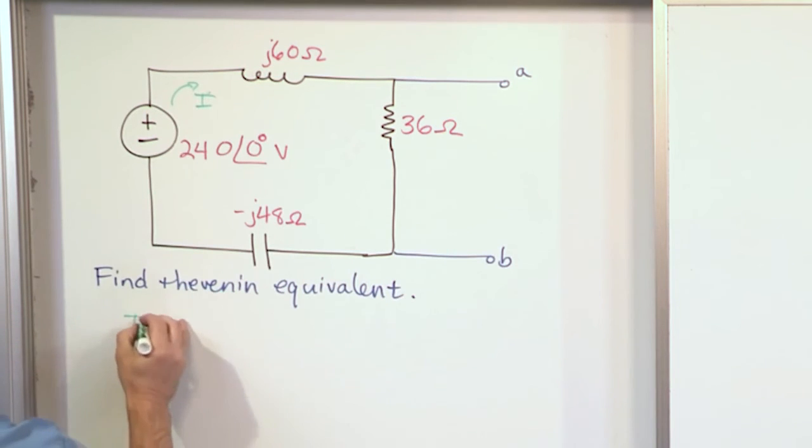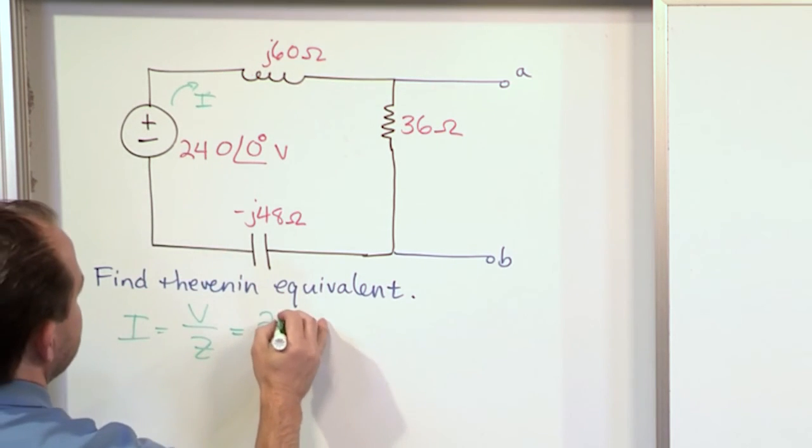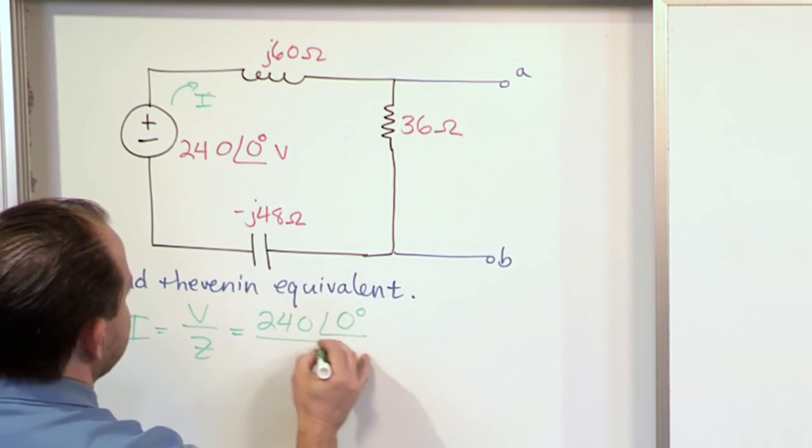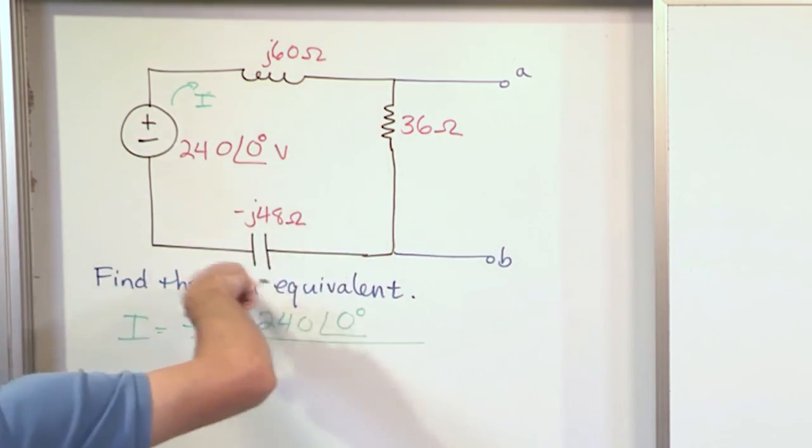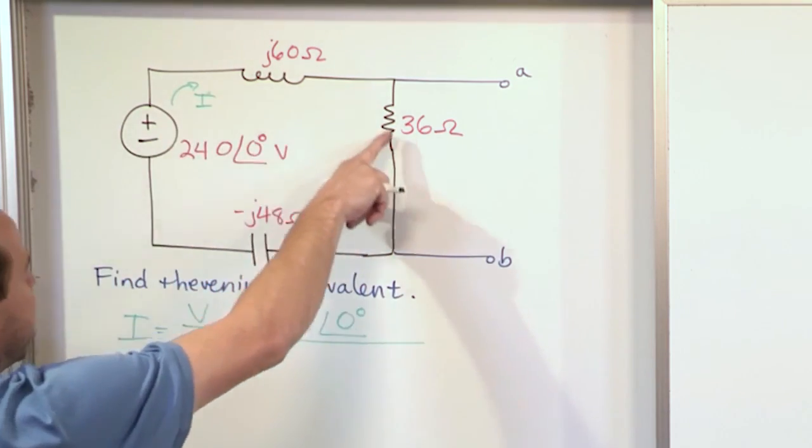This current I is very simple because this circuit is so simple. It's just Ohm's law, V over Z. This is just Ohm's law. The voltage is given in the problem statement, 240 at an angle of zero degrees. That's the voltage. And the impedance is the total impedance there in this loop here.